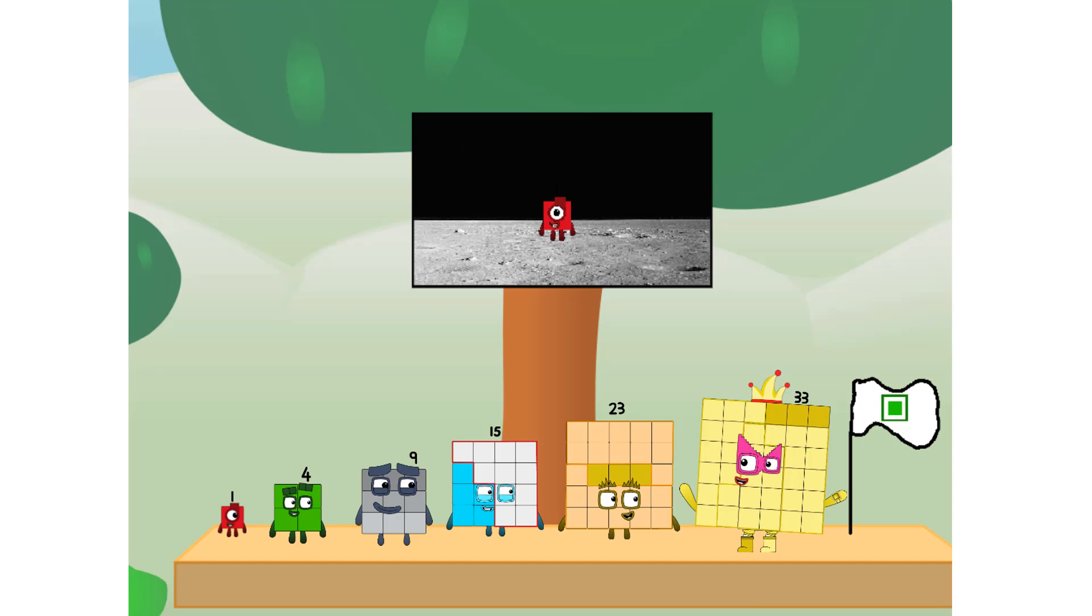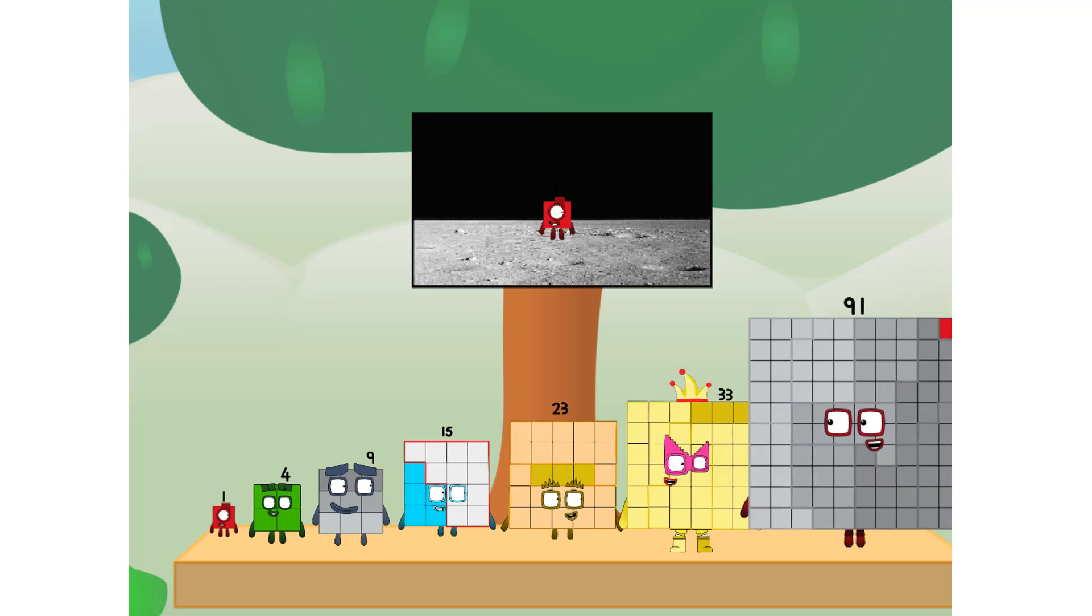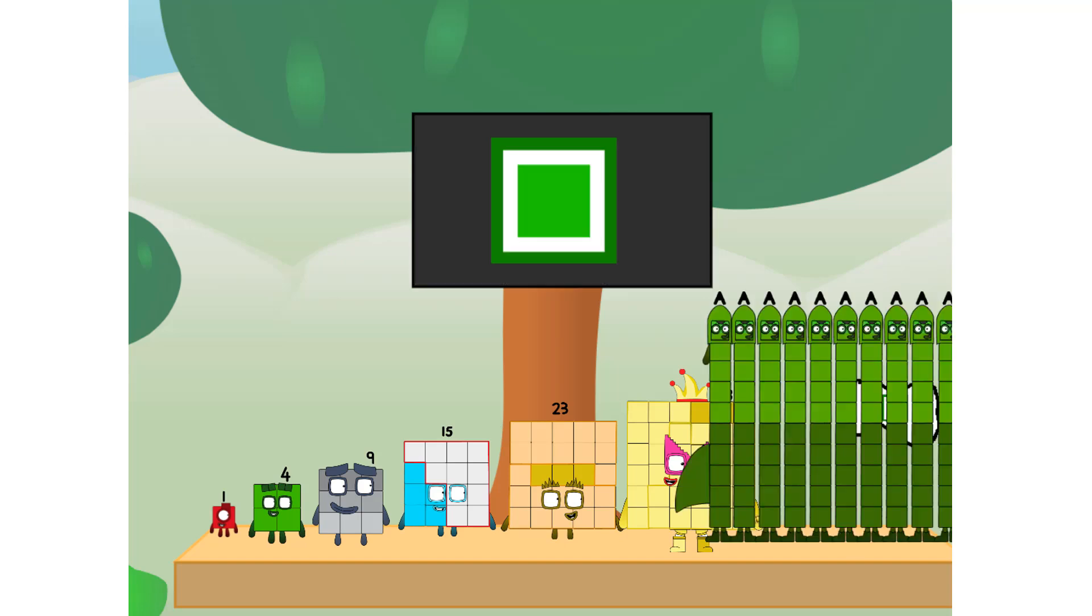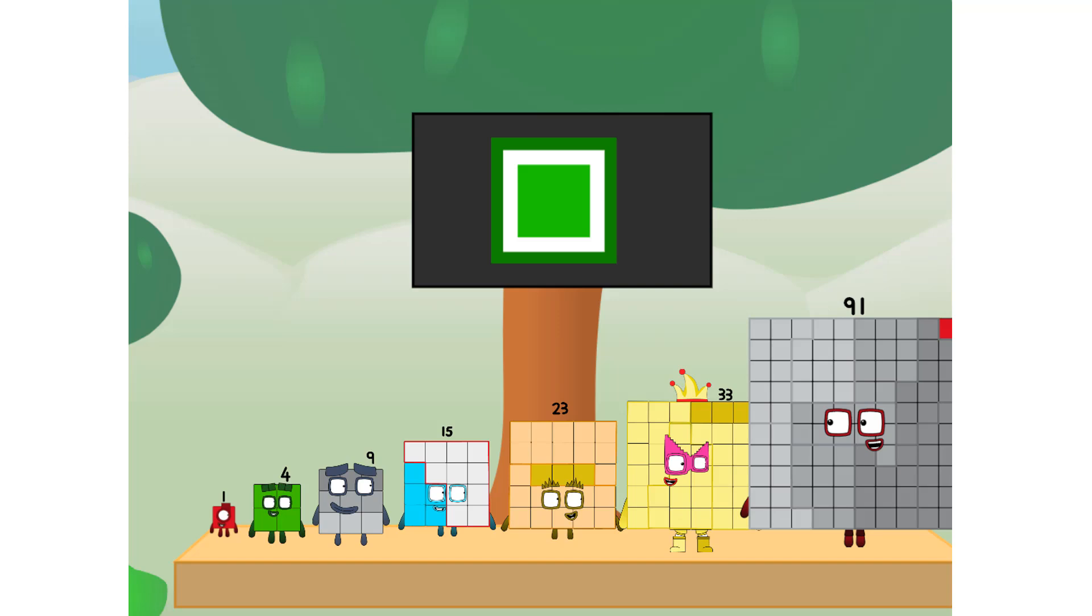We did it. The only thing left now is to plant the square club flag. Numberland, we have a problem. I forgot the flag. Don't worry, little one. I'll take care of this. 91. No rockets. Square power only.